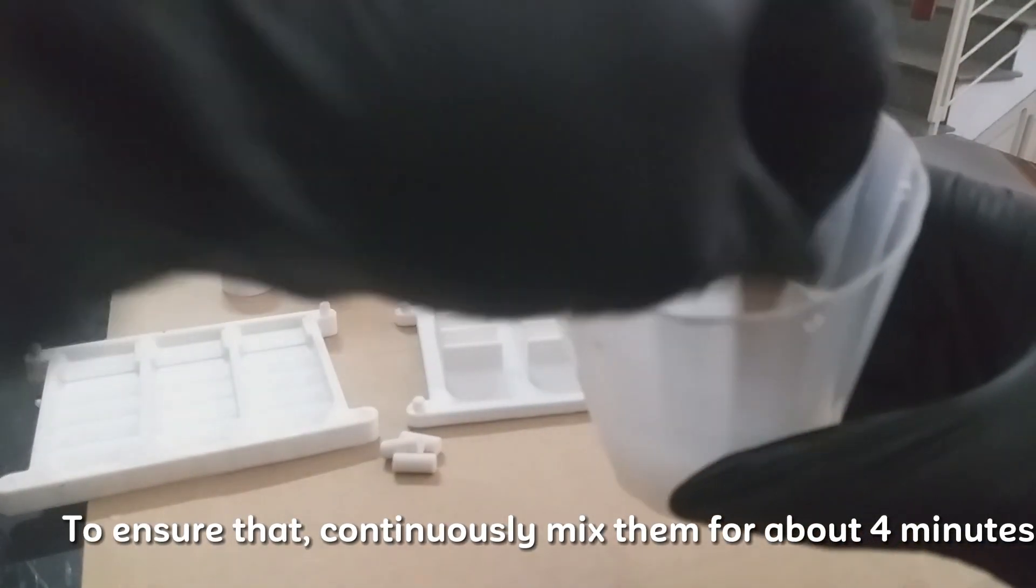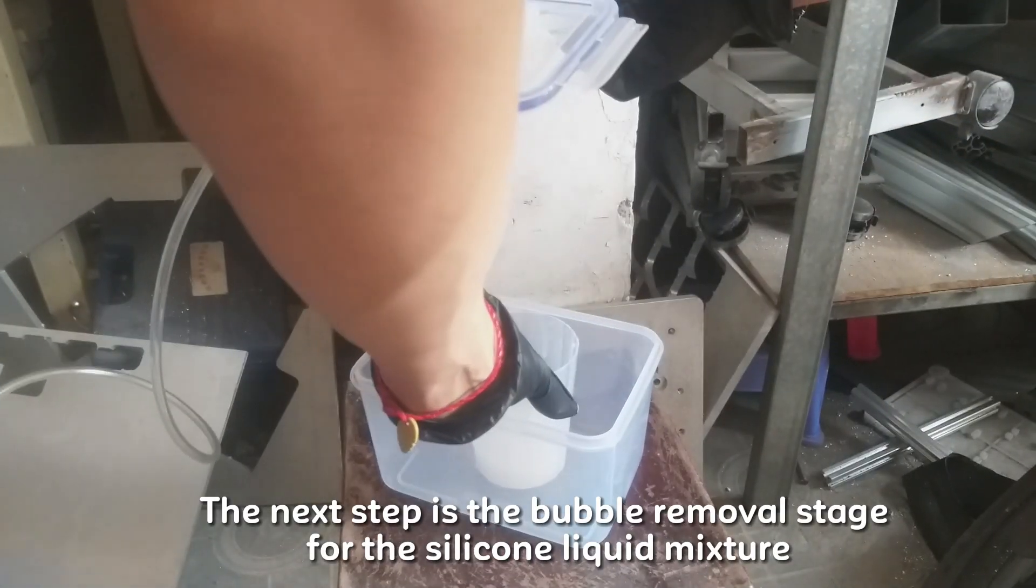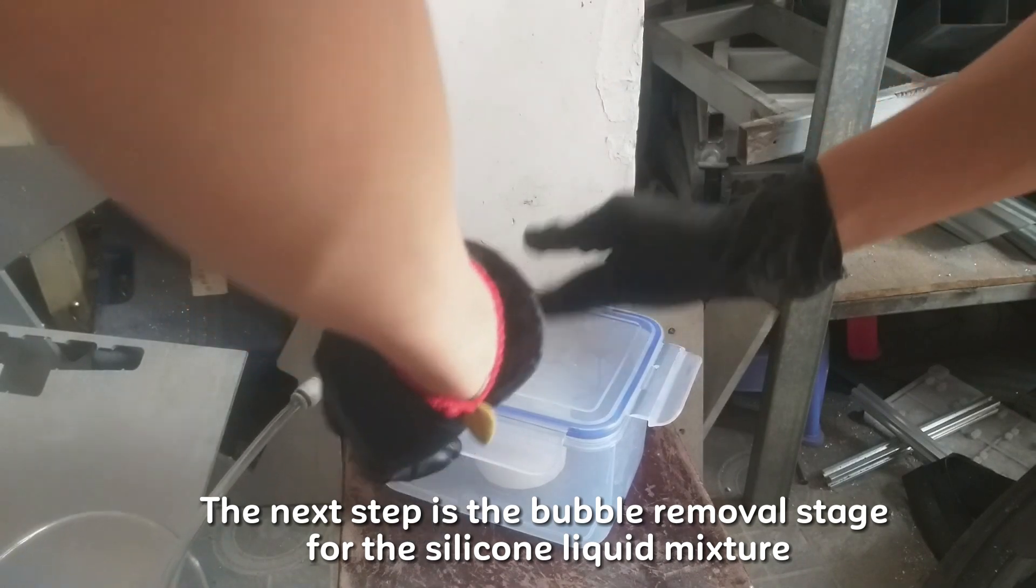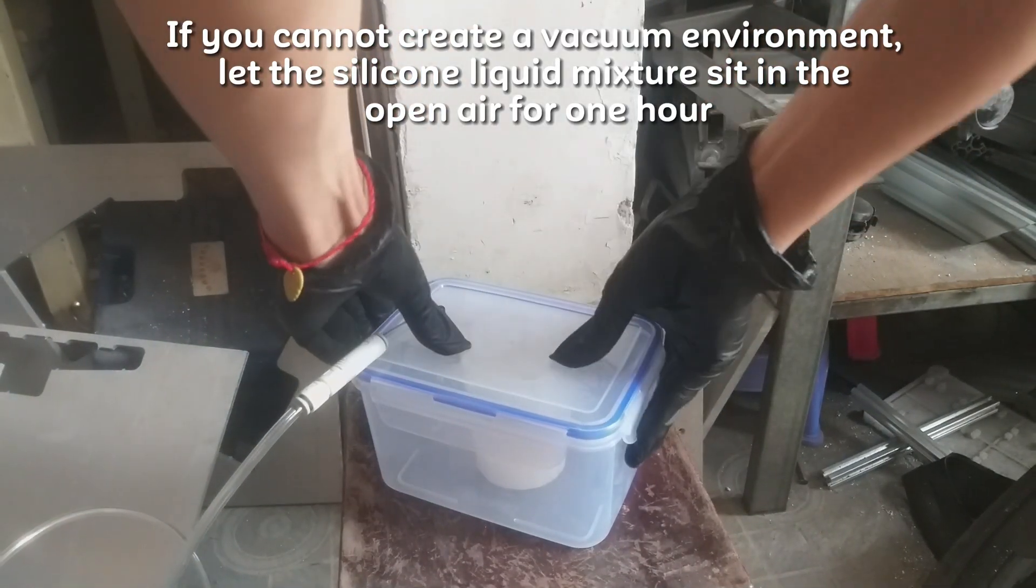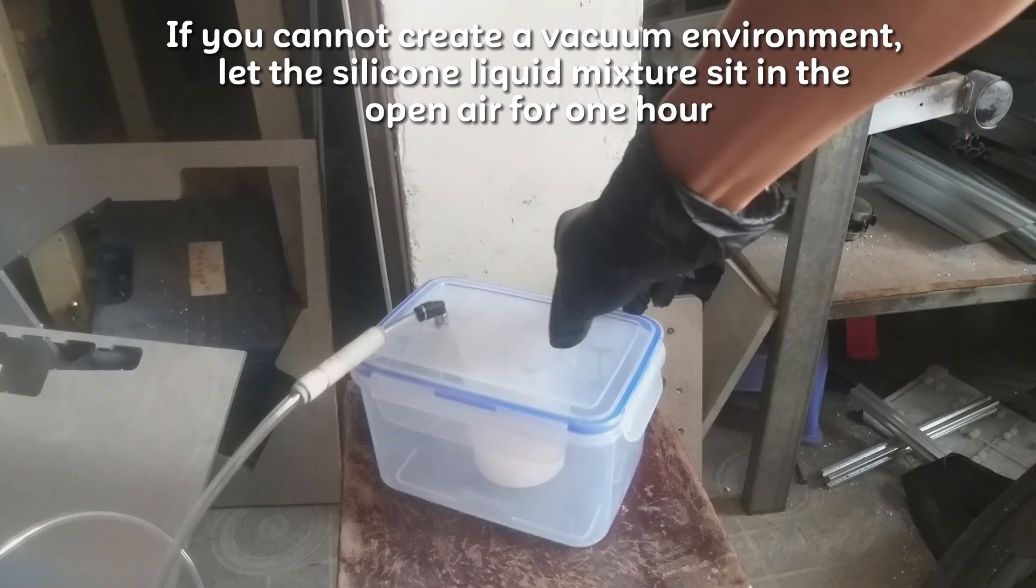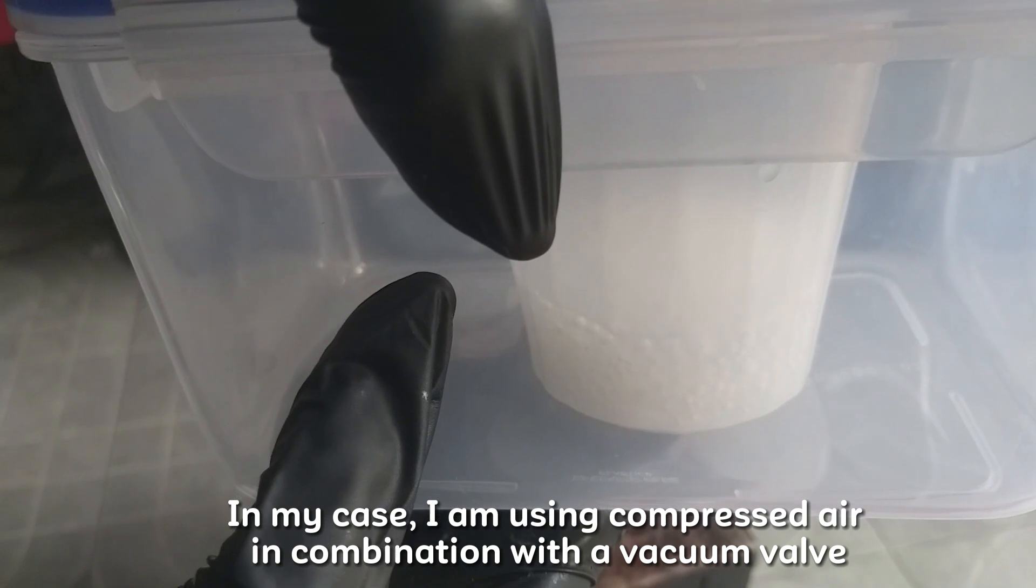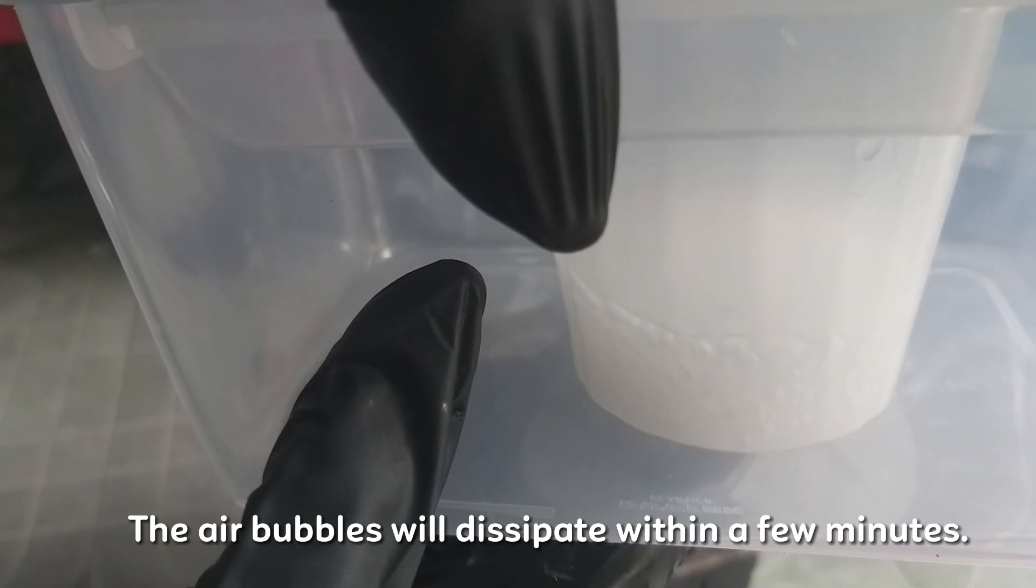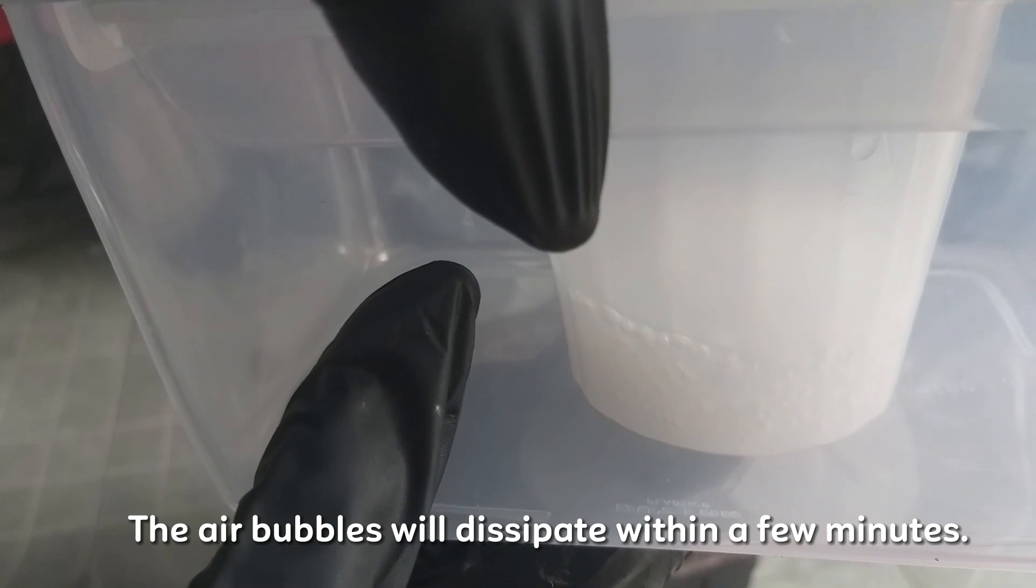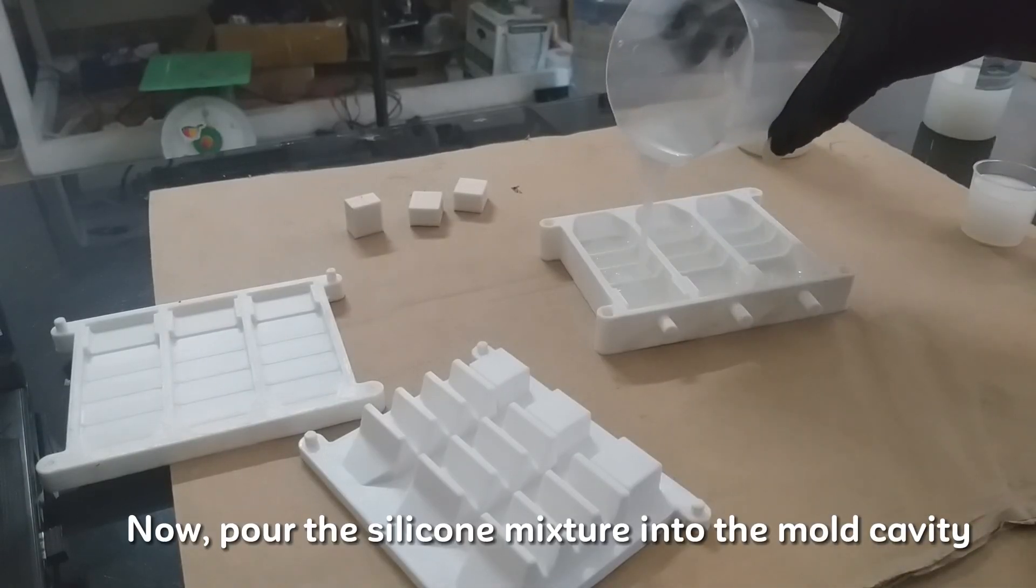To ensure that, continuously mix them for about 4 minutes. The next step is the bubble removal stage for the silicone liquid mixture. If you cannot create a vacuum environment, let the silicone liquid mixture sit in the open air for 1 hour. In my case, I am using compressed air in combination with a vacuum valve. The air bubbles will dissipate within a few minutes.